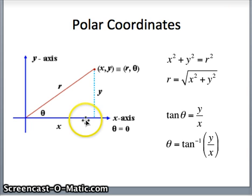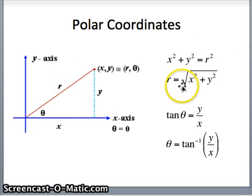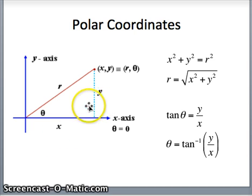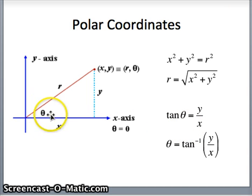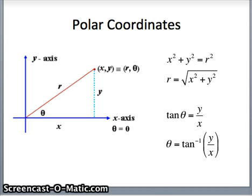Now what's our other way of looking at this? We have our same triangle: x this distance, y this distance, r here. We can see this is a right triangle, so x squared plus y squared is r squared. And r is the square root of x squared plus y squared. If I'm given x and y and I want to find theta, the way to do that would be to look at the tangent. The tangent is opposite over adjacent, so tangent of theta is y over x. Therefore theta would be the arctangent of y over x. So if given x and y we want to find r and theta, these two rules will get us there.